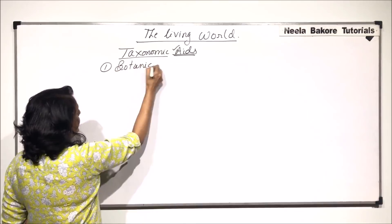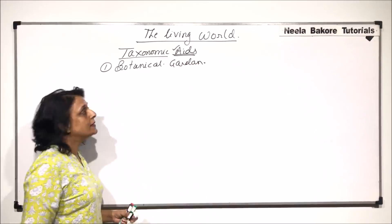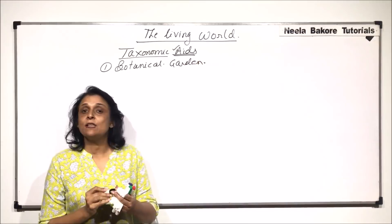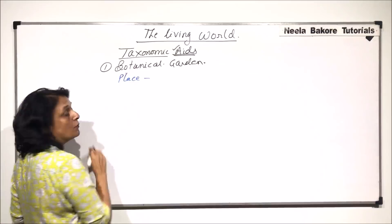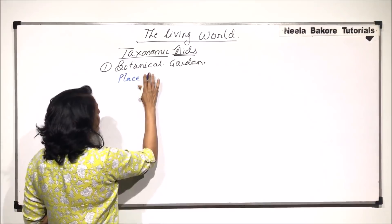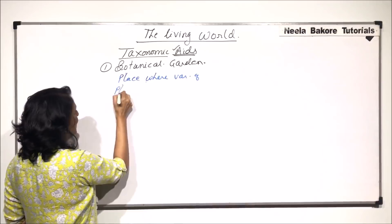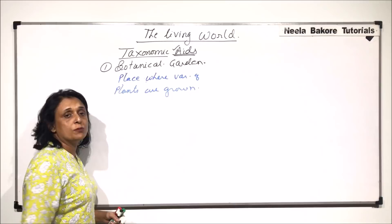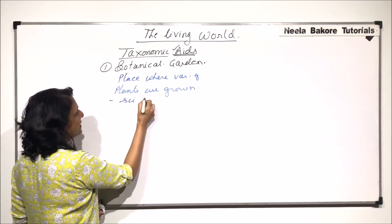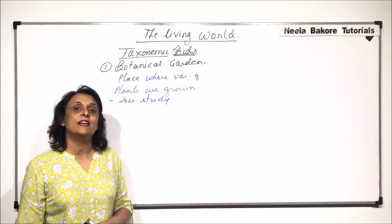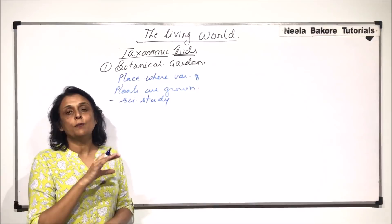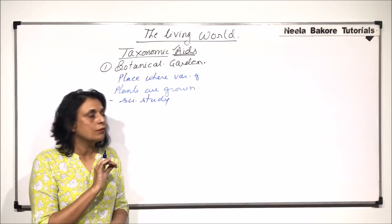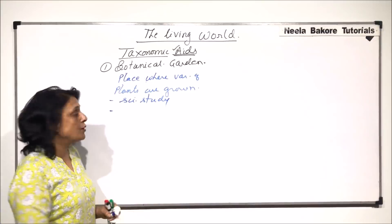The first taxonomic aid we are talking about is botanical gardens. A botanical garden is a place where we grow various varieties of plants. The purpose is for scientific study, so that we are able to study these plants in a proper scientific manner. That is why we visit botanical gardens — to understand how the plant grows, what its structure looks like, and so on. It helps in scientific study and also helps to educate people.